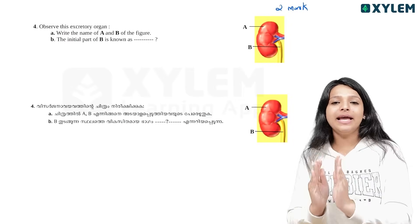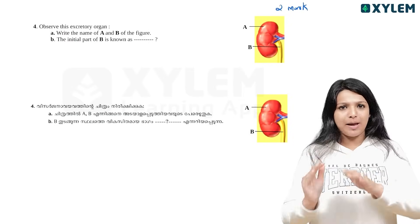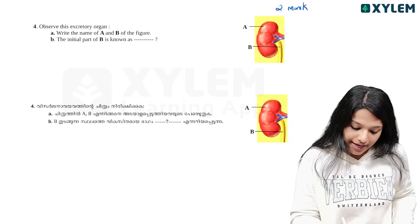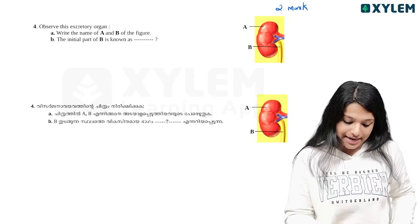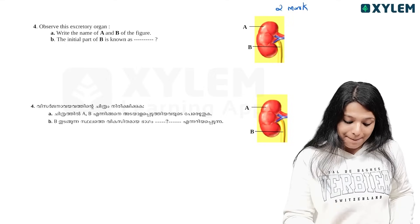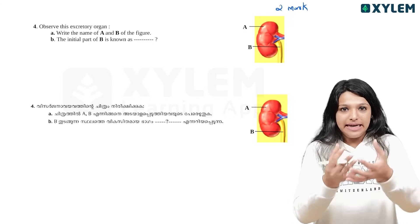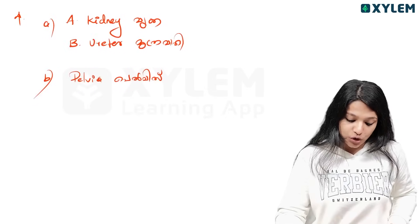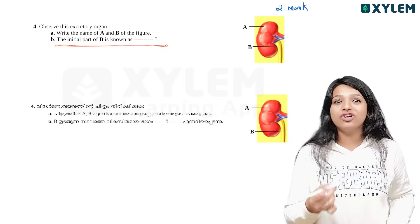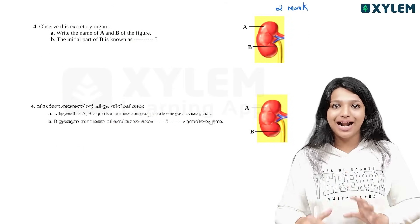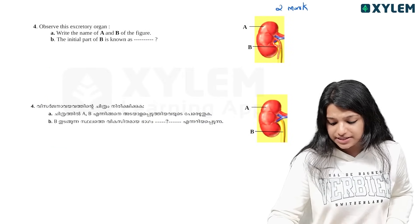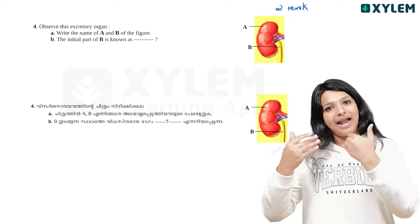Let me show you. Check out our kidney picture — the normal external picture, no internal picture. Check out our glomerulus and nephron picture. Observe this excretory diagram. Write the name of A and B. A is a part we have to identify in the kidney. B is a part in our system. This bone is the ureter. The initial part of B is known as the pelvis. I have a urinary bladder as well.